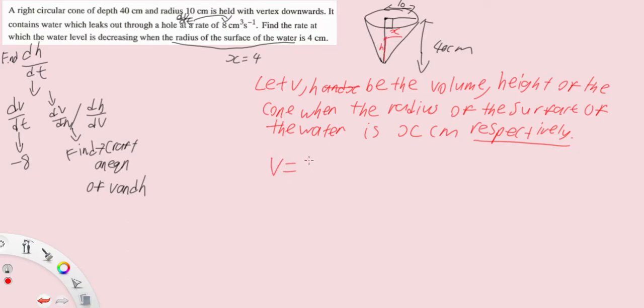So we have v equals to, for the cone, we're going to use volume of cone, one third pi r squared h, one third pi x squared h. What is the problem? We want to craft an equation of v and h but we have x now. What do we do? Because we have x, our next step will be find an expression of x and h. How? Very simple.